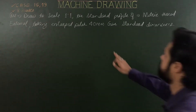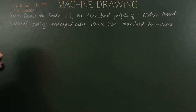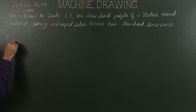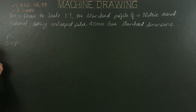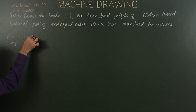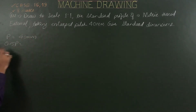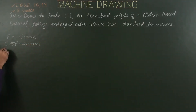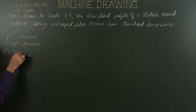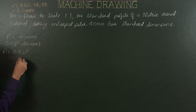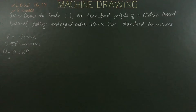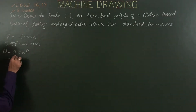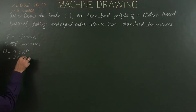The given pitch is 40mm. For metric thread external, first of all we are required to calculate all standard dimensions. So pitch P is 40mm, half of P is 20mm, then capital D is 0.86 of P, which gives 34.4mm.